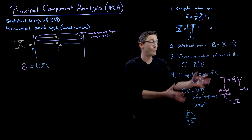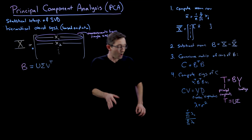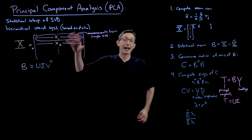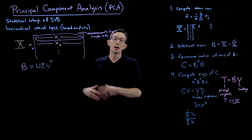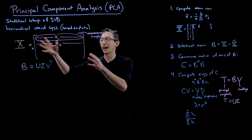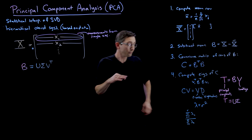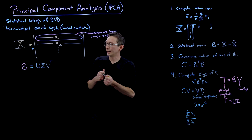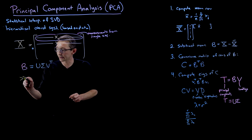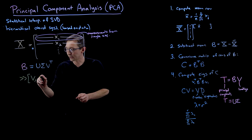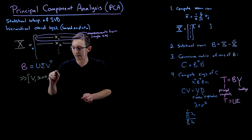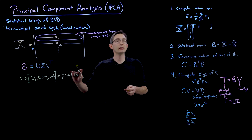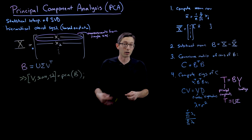For example, you might decide to keep only as many principal components as needed to explain 95% of the variance — that gives a criterion for how many to keep. We're going to code this up with a couple of real data matrices: one will be a random data matrix, another will consist of genetic markers for people with and without ovarian cancer. In MATLAB it's very simple: [V, score, s2] = pca(B), and it's equally easy in R and Python.